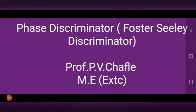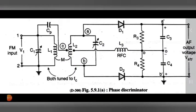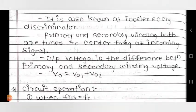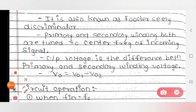Today we see the topic that is phase discriminator, also called as a Foster-Seeley discriminator. This is the diagram for phase discriminator in which the input is FM input and output is the AF output voltage. See the detail description points about phase discriminator one by one.